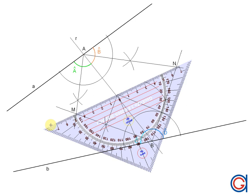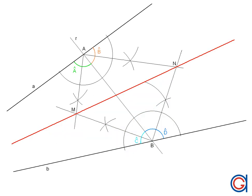Now all we need to do is to join these two points M and N with a thicker red line, prolongating it, and this is the angular bisector of the two converging lines A and B that we were looking to draw.